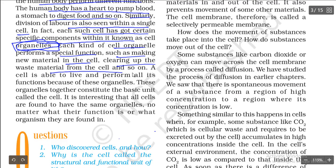Each kind of cell organelle performs a specific function, such as making new material in a cell or clearing up waste material from the cell. Making new material refers to reproduction, and clearing up waste material refers to excretion. All activities - reproduction, respiration, excretion, and metabolism - are done by a single cell through its organelles. A cell is able to live and perform all its functions only because of these organelles.